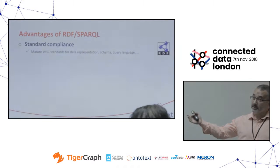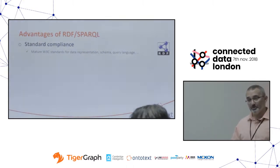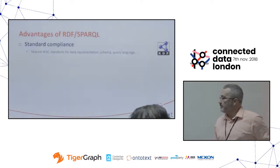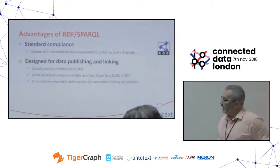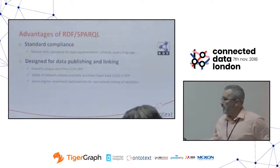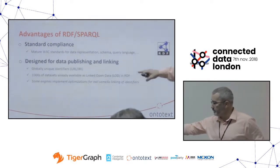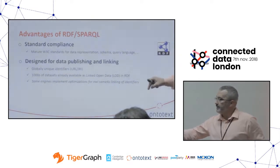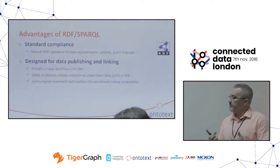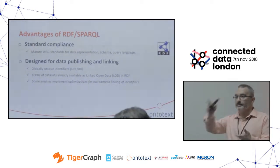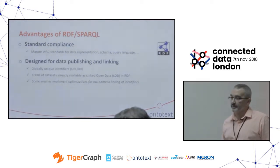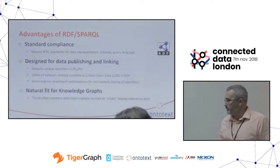If you're in the use case of maintaining a big knowledge graph of master data concepts and annotating your precious content against it, then being able to do proper data governance and schema validations is really important. The set of standards around RDF and SPARQL allows you to do so. Other advantages include globally unique identifiers, lots of linked open data, and many engines including GraphDB have optimizations that allow you to very easily make clusters of identifiers — information about the same entity from different sources — making data linking and data fusion much faster.